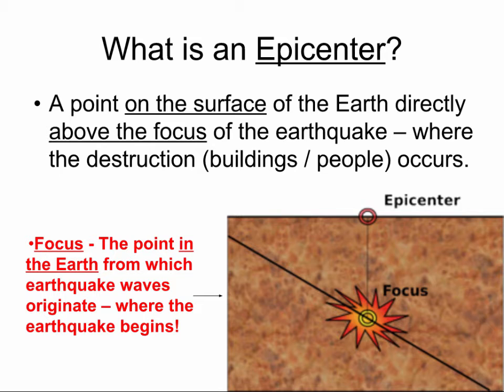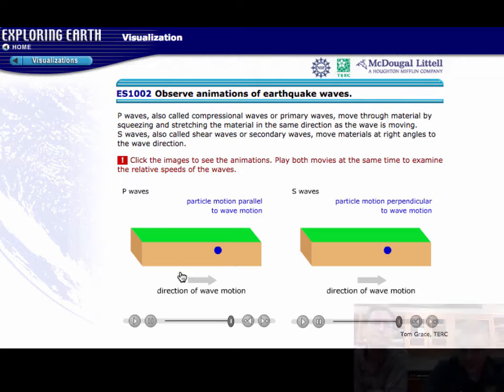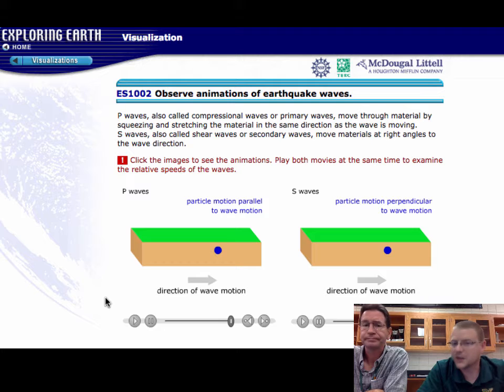Now, in both cases, the energy moves out from the center in all directions. So it moves outward from the focus, both downward, outward, and upward, and that upward energy hits the epicenter, which then moves outward from the center. So there's two ways that the earth can shake.